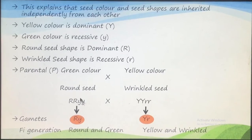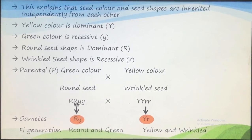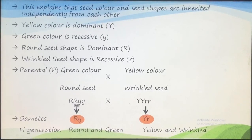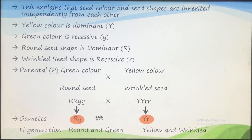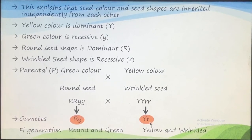Before fertilization, gametes are formed. Only one type of gamete will be formed from the first parent — having one capital R and one small y — because gametes have only one allele for each character. Since we are taking two characters together, the gametes will have one allele for both characters: capital R for round seed and small y for green color. The second parent will also produce one type of gamete only: capital Y for yellow color and small r for wrinkled seed.